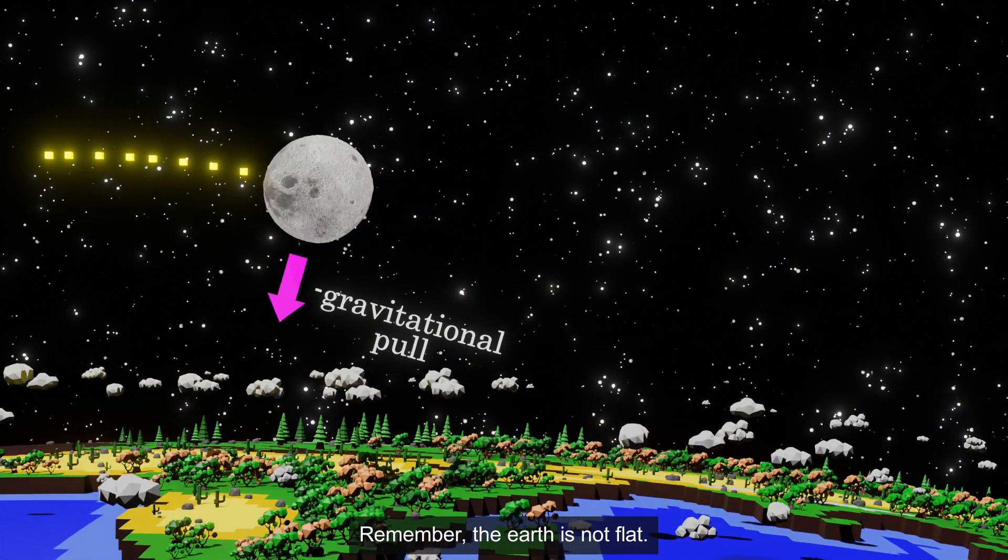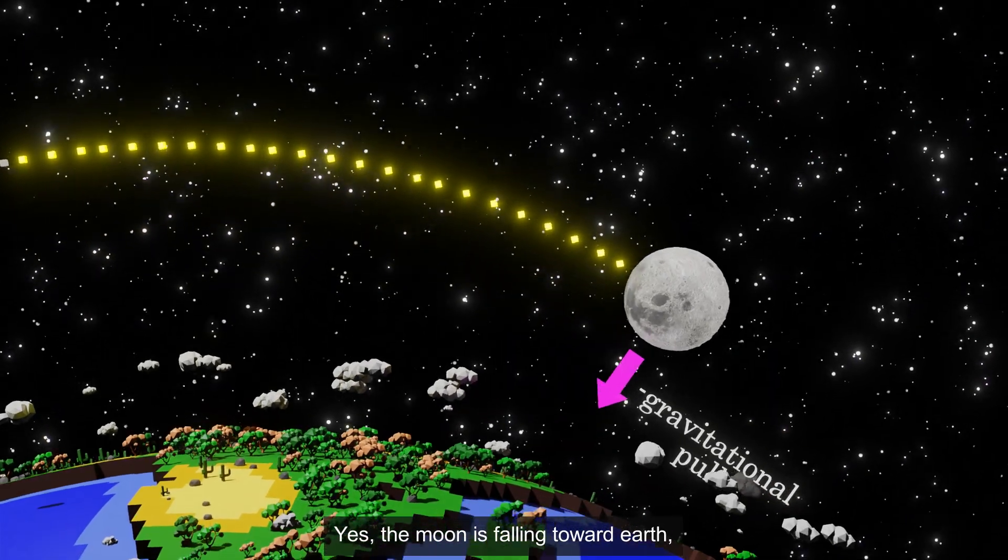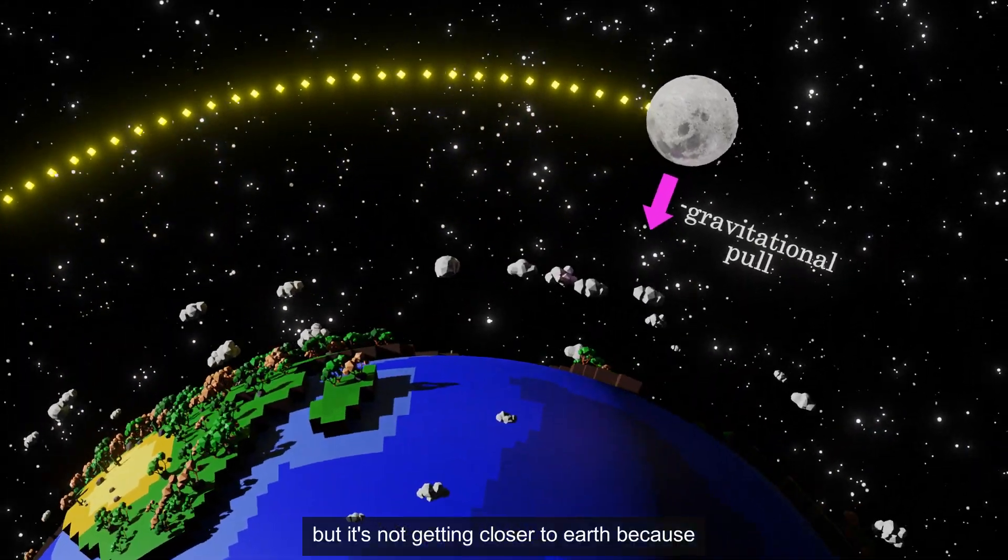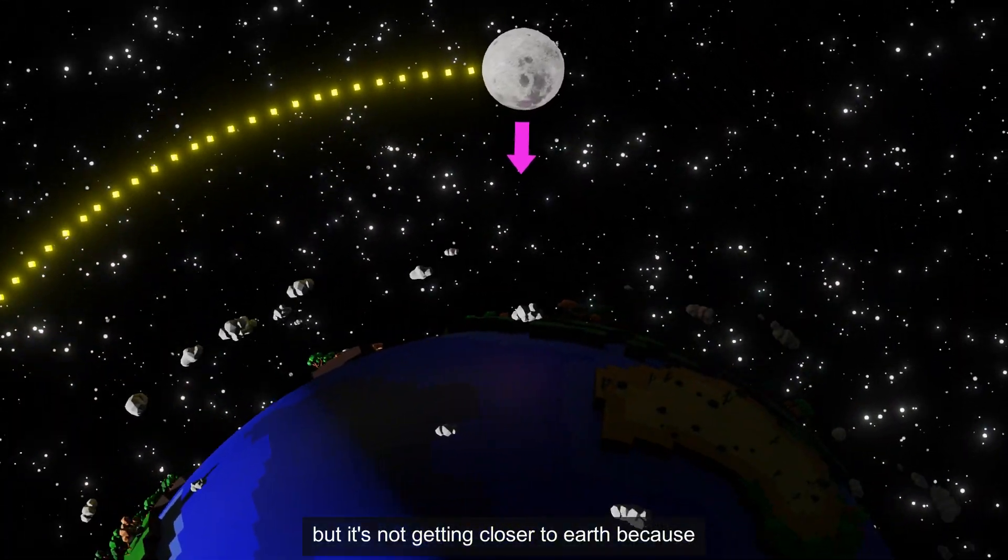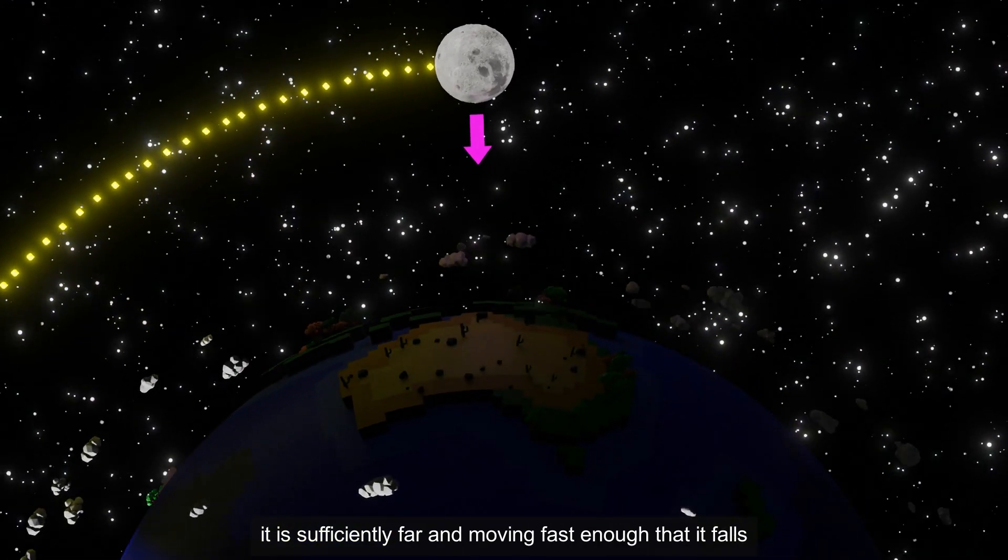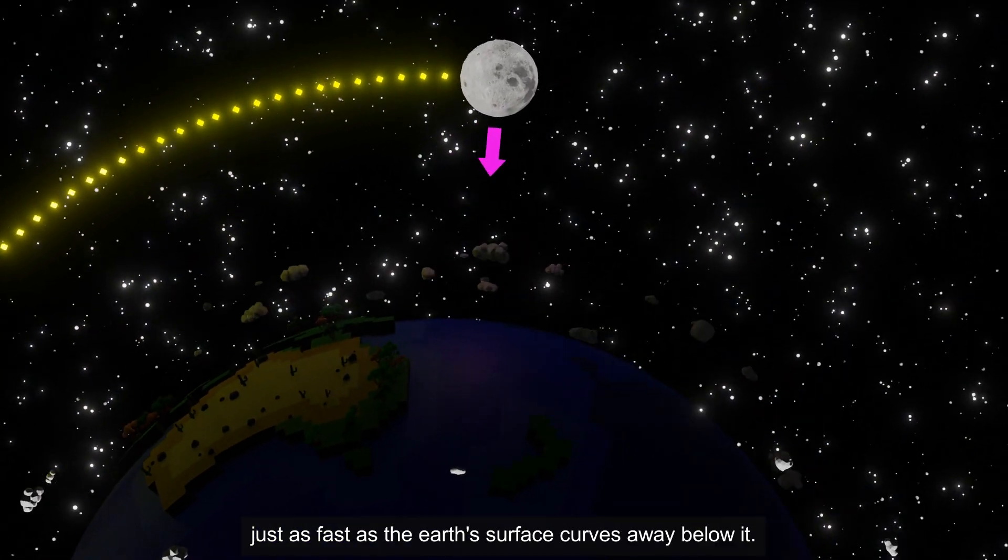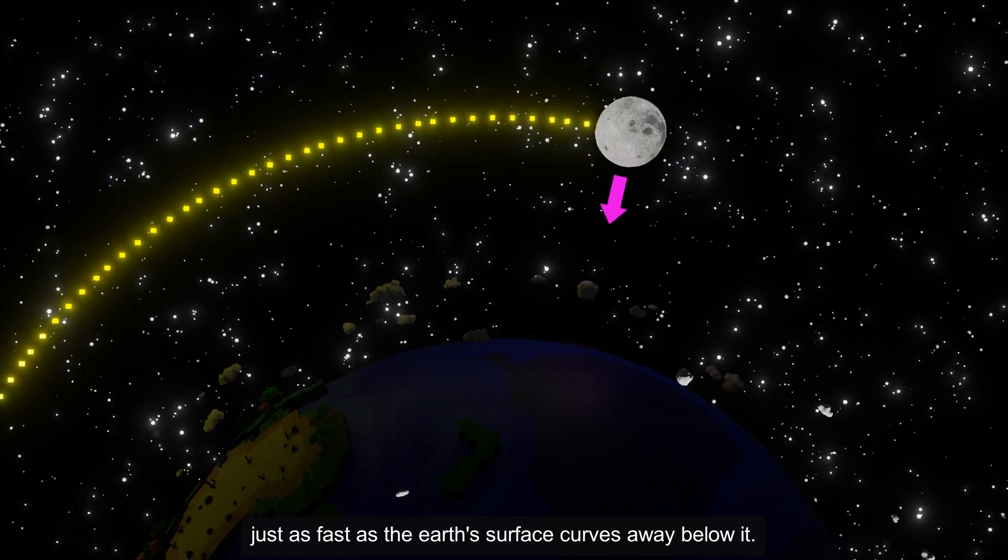Remember, the Earth is not flat. Yes, the Moon is falling toward Earth, but it's not getting closer to Earth because it is sufficiently far and moving fast enough that it falls just as fast as the Earth's surface curves away below it.